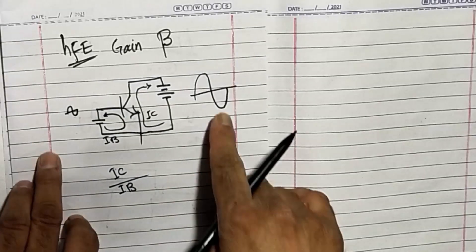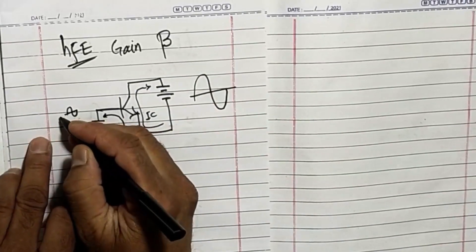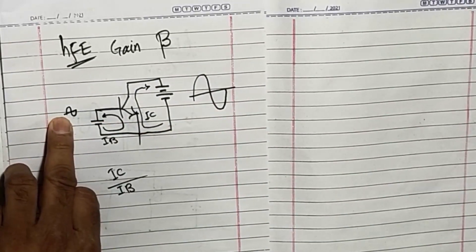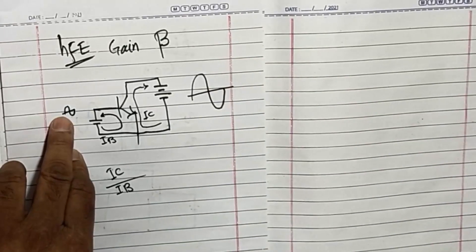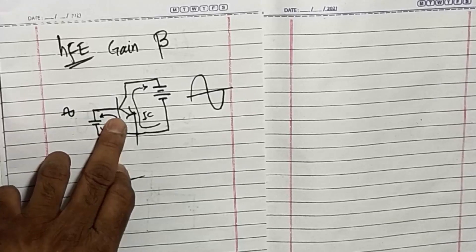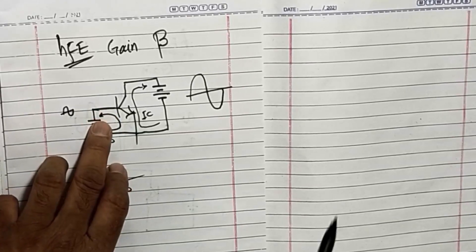We take output like this. We apply a 1 millivolt signal here. One millivolt signal will cause 1 milliampere current to flow here, for example.